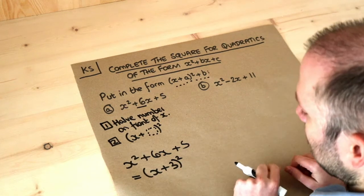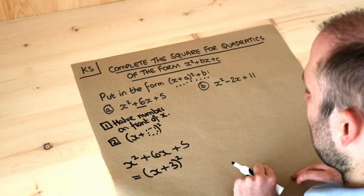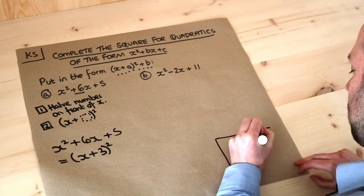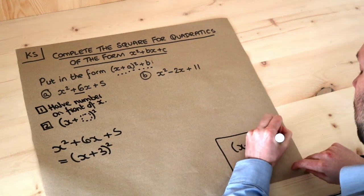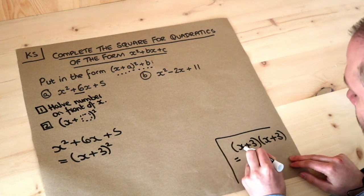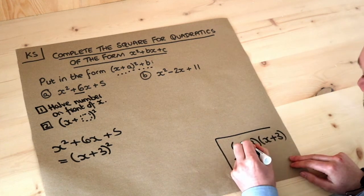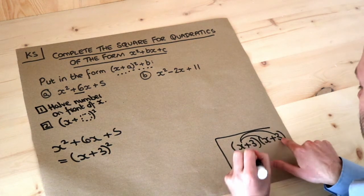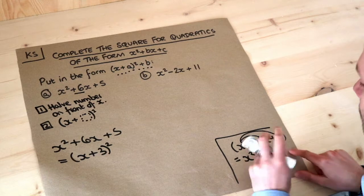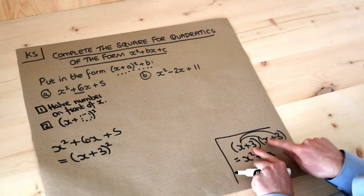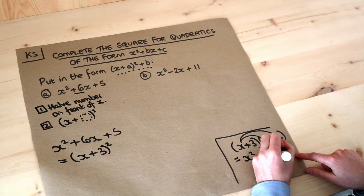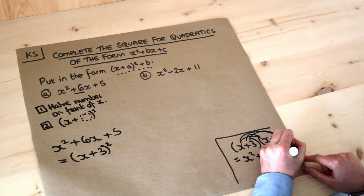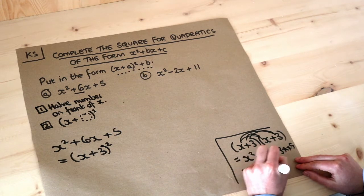Now let's consider what x plus three squared would give us. If we expand that — x plus three times x plus three — we do each thing in the first bracket times each thing in the second. x times x is x squared, x times three is 3x, three times x is 3x, and three times three is nine. That gives us x squared plus 6x plus nine.